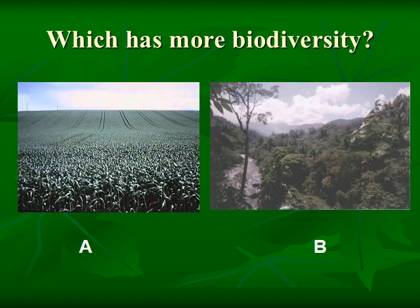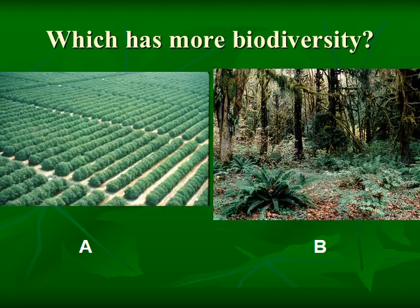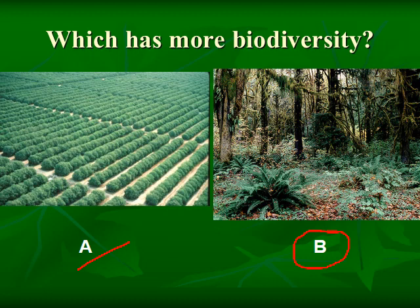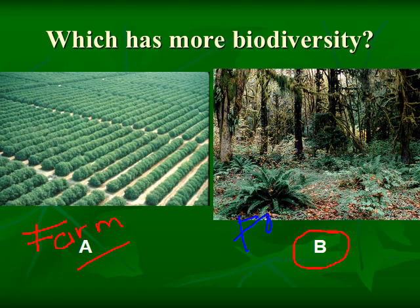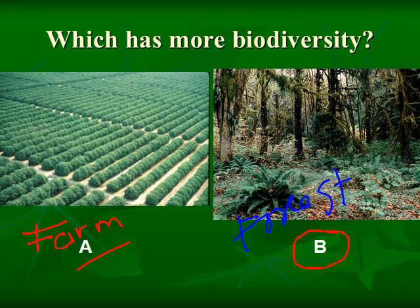In further comparisons, B is more diverse. If you notice, picture A is a farm, and this is how man would think — we want things in order. But if you look into a natural ecosystem, like a forest, it is diverse. This is because nature is designed to accommodate diversity, not uniformity.